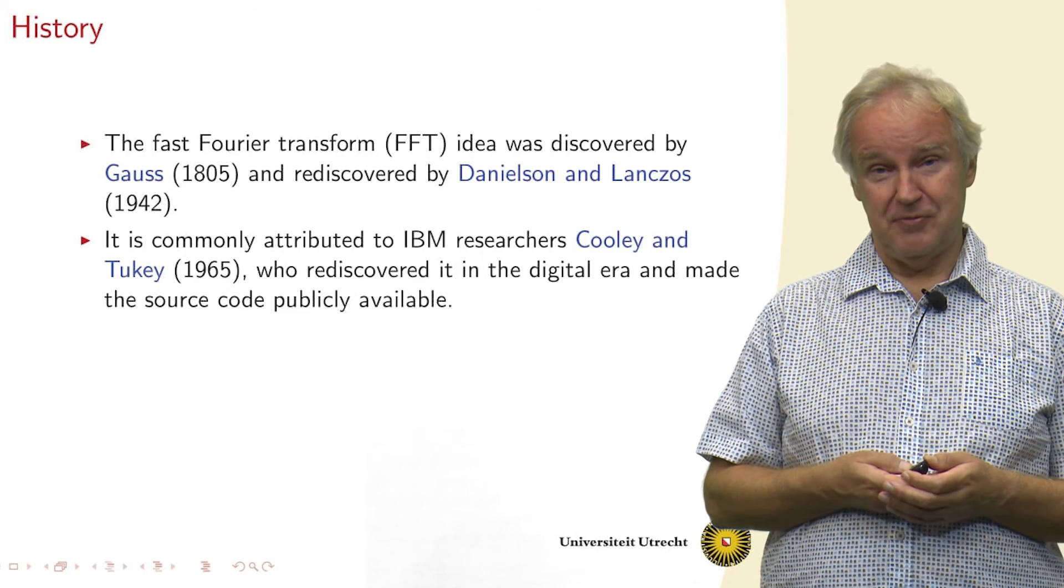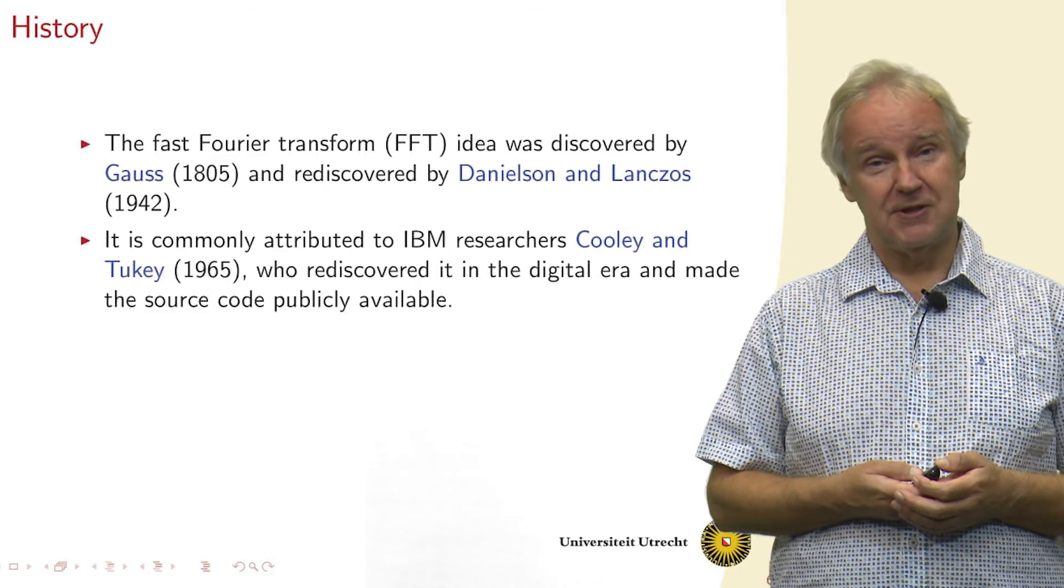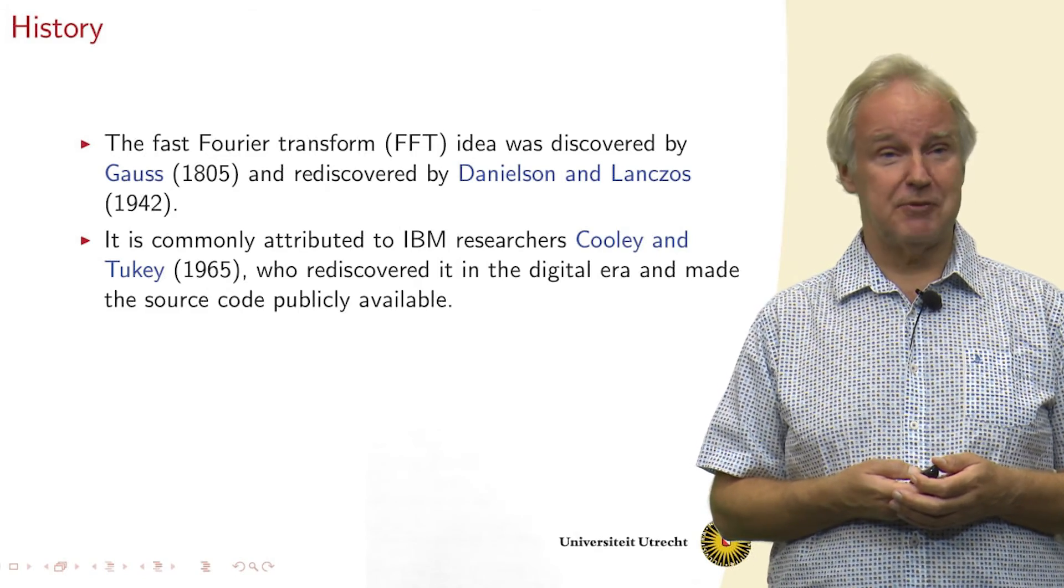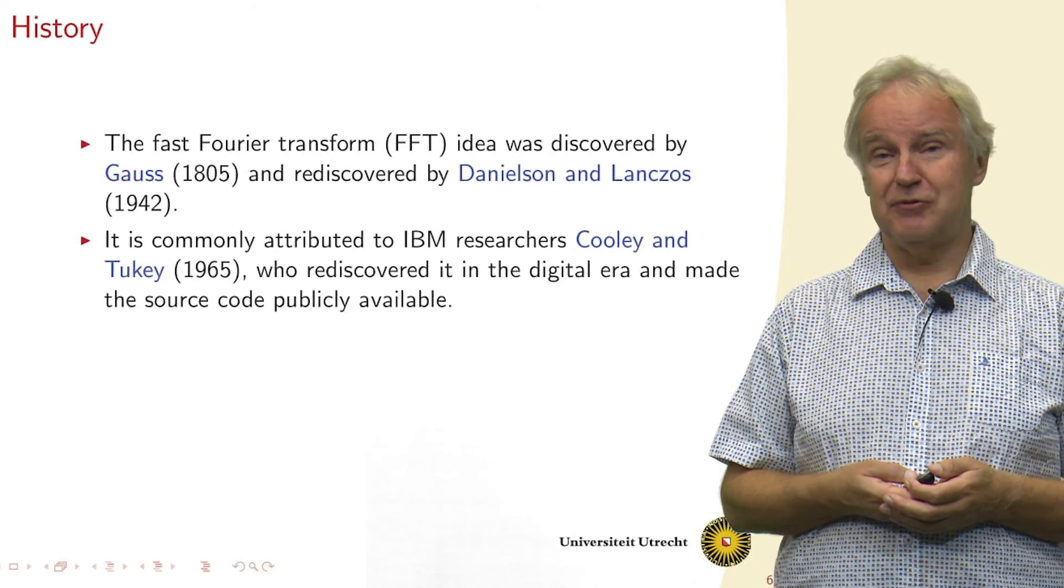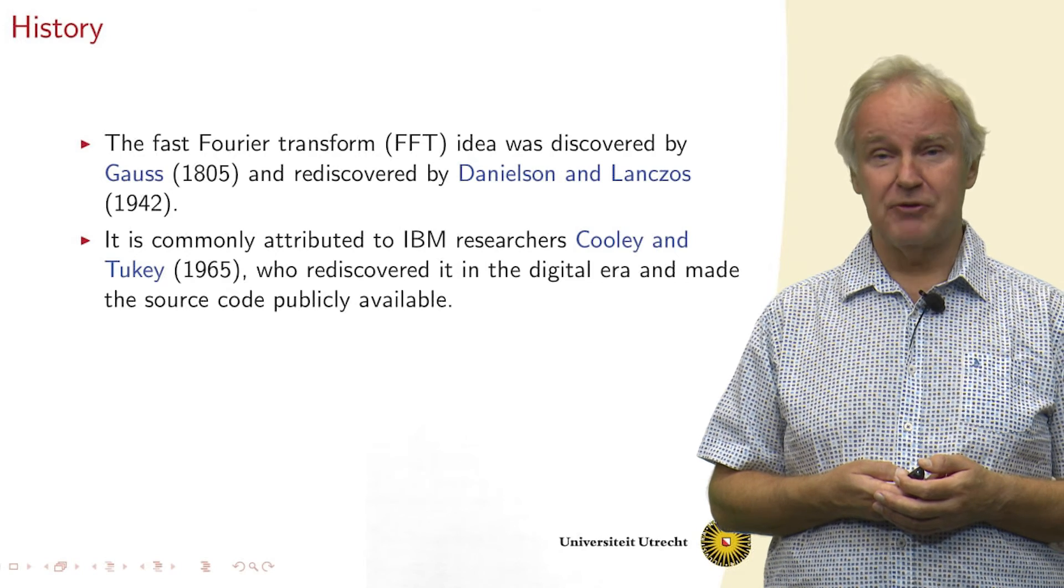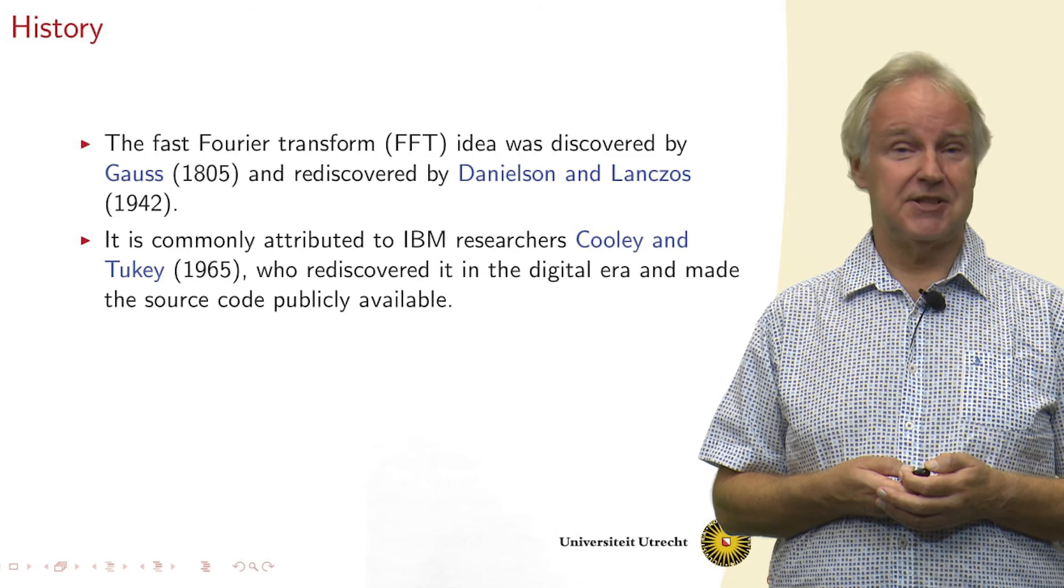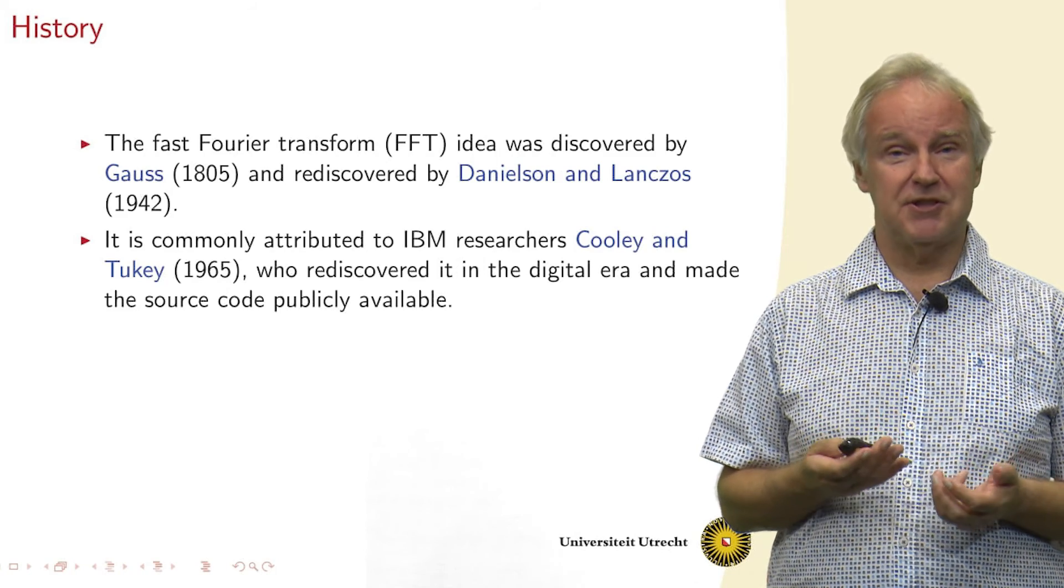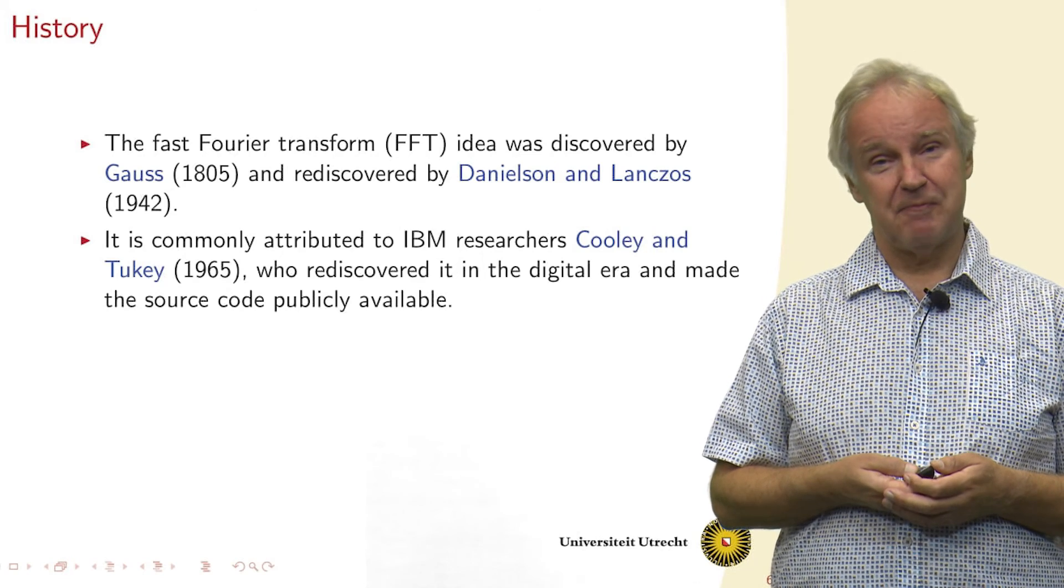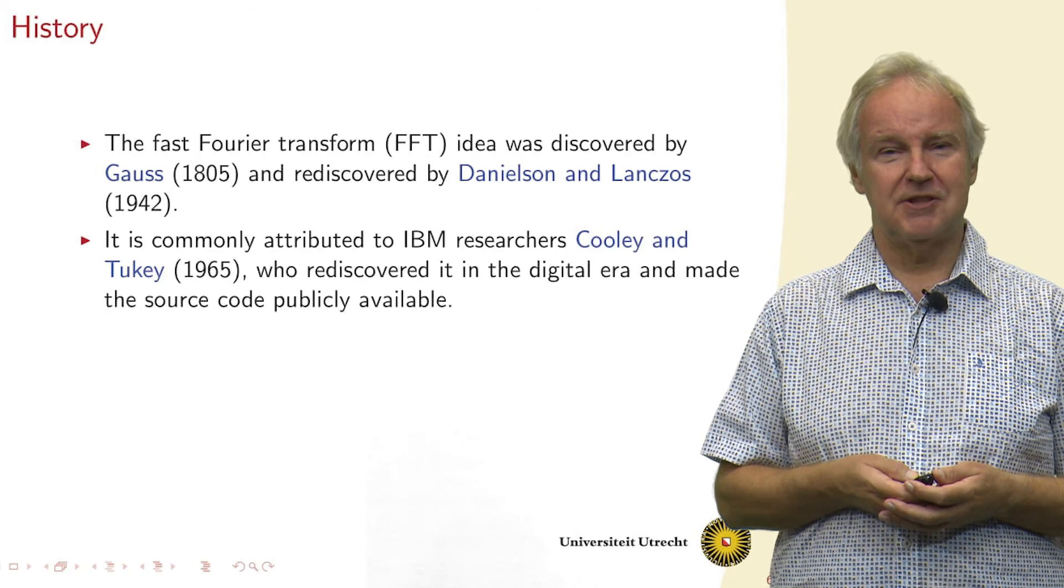So the history of the fast Fourier transform: it actually was already discovered by Gauss in 1805, and it was rediscovered by Danielson and Lanczos in 1942. But it really became famous and is often attributed to Cooley and Tukey, who worked at IBM in 1965. When they published their results and also made the code open source, it became used in many different applications immediately.